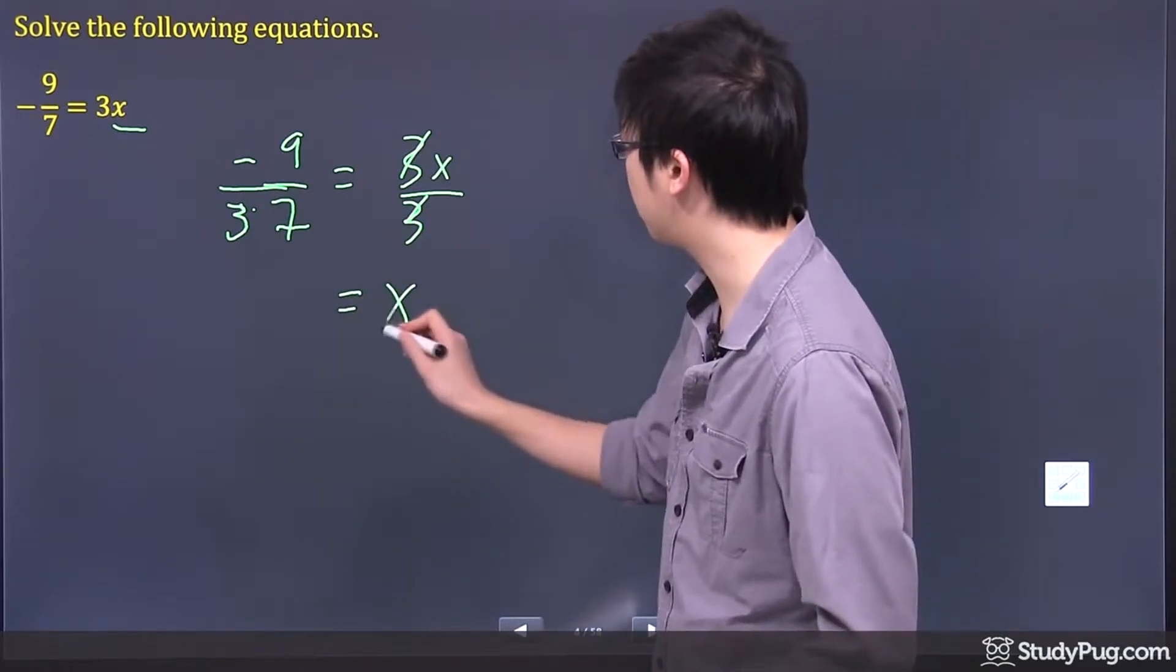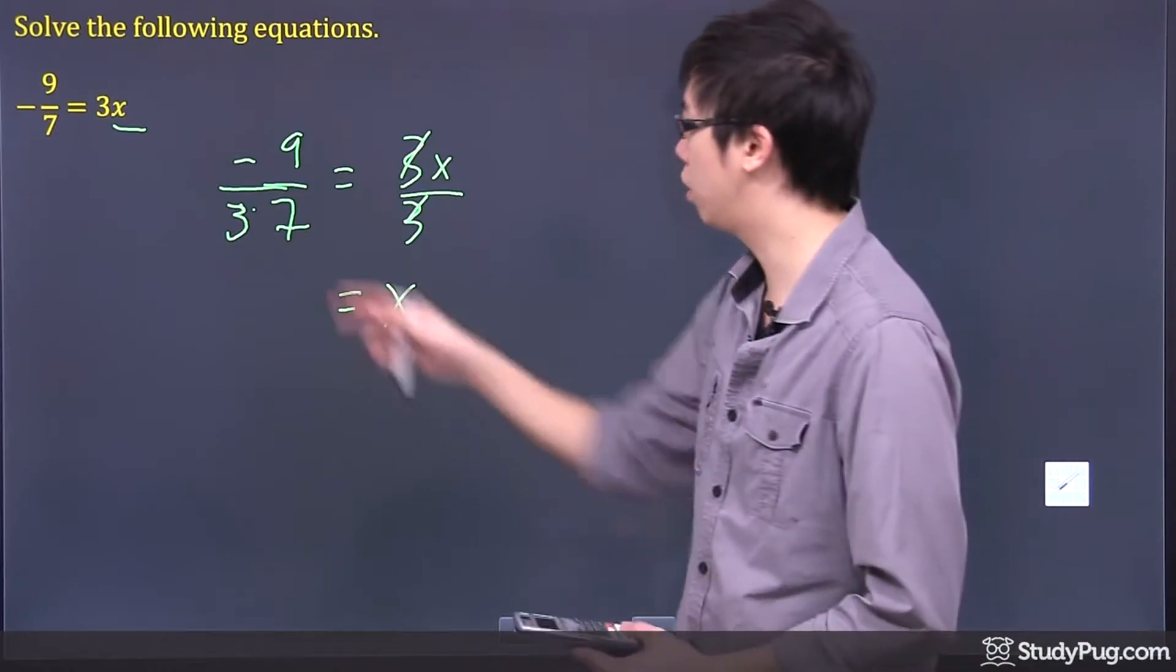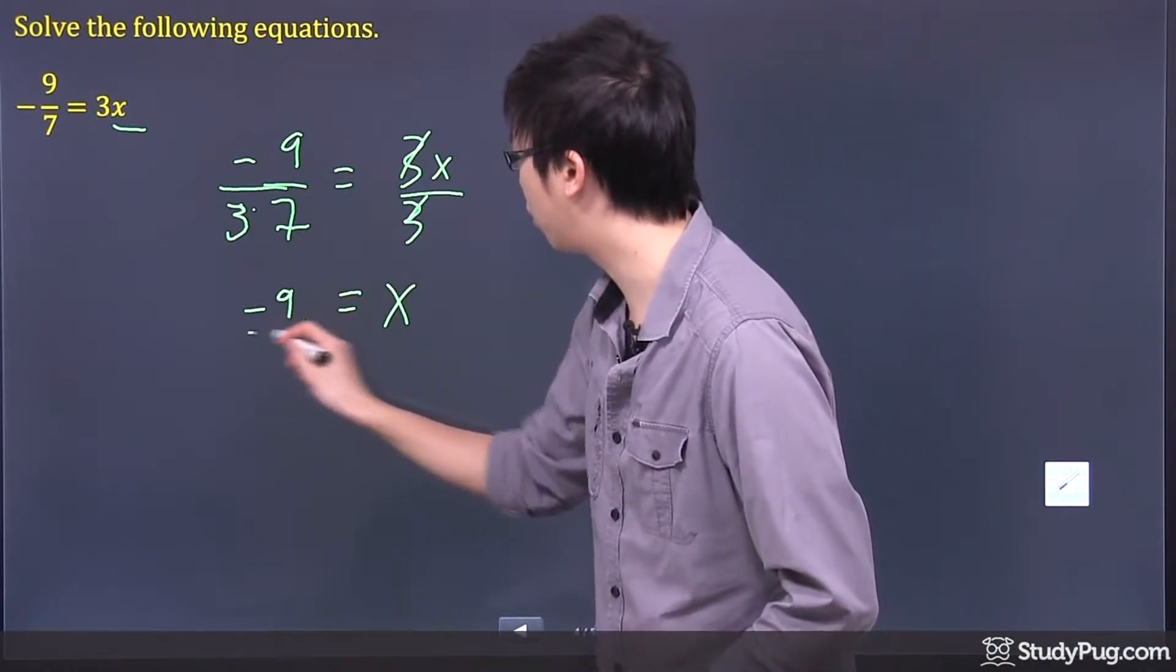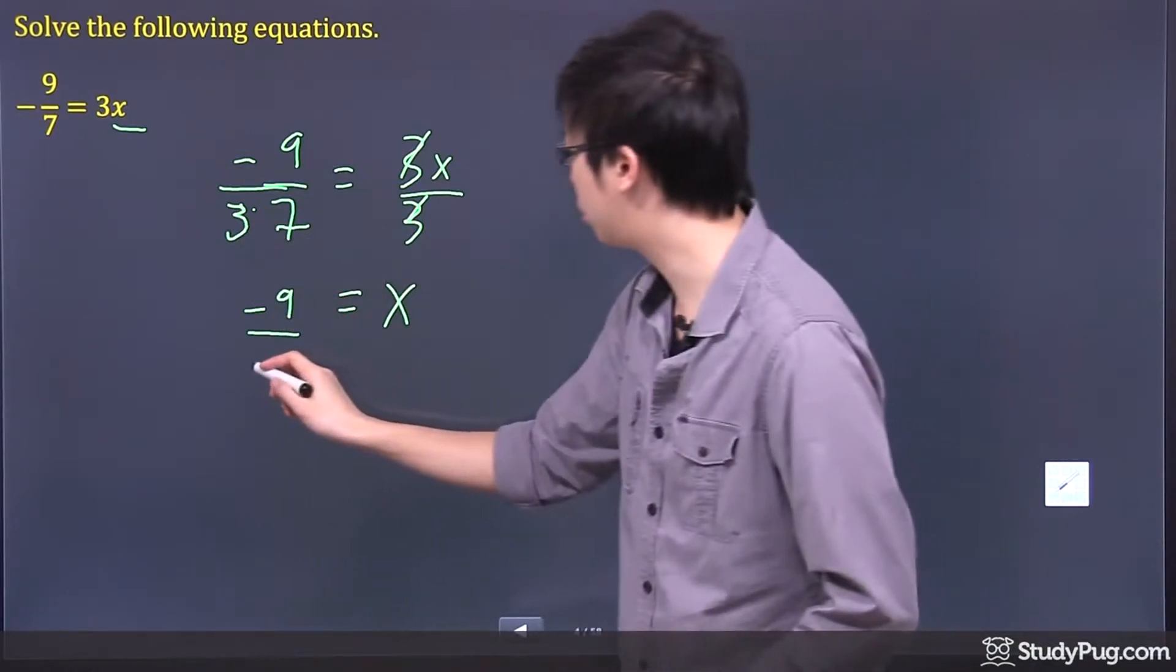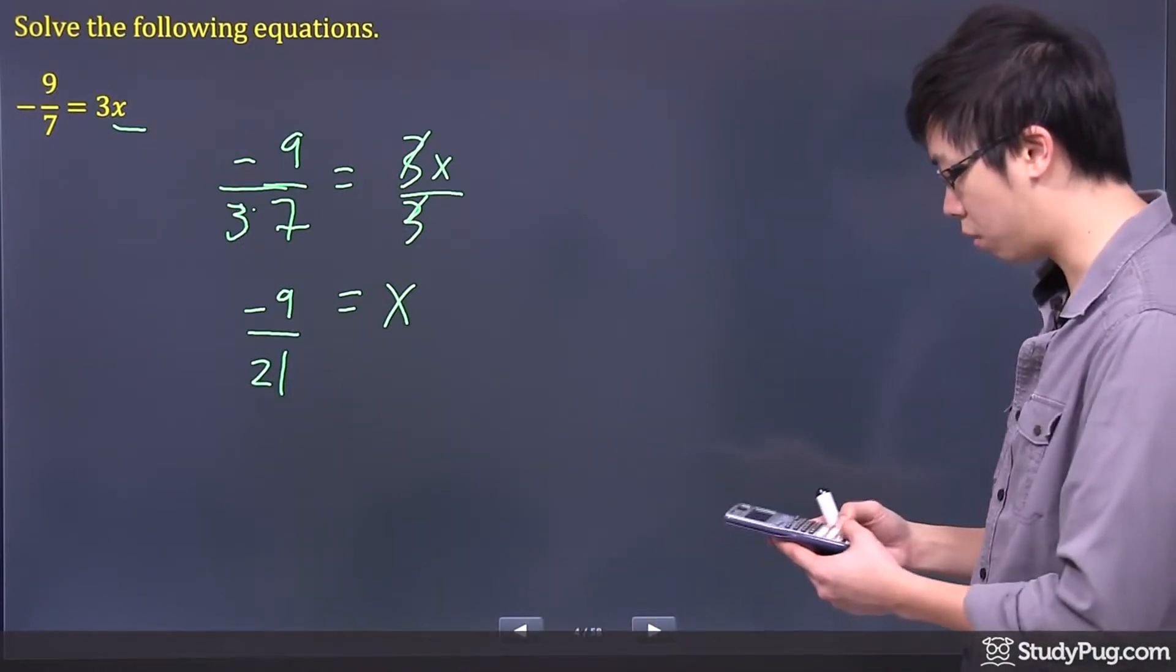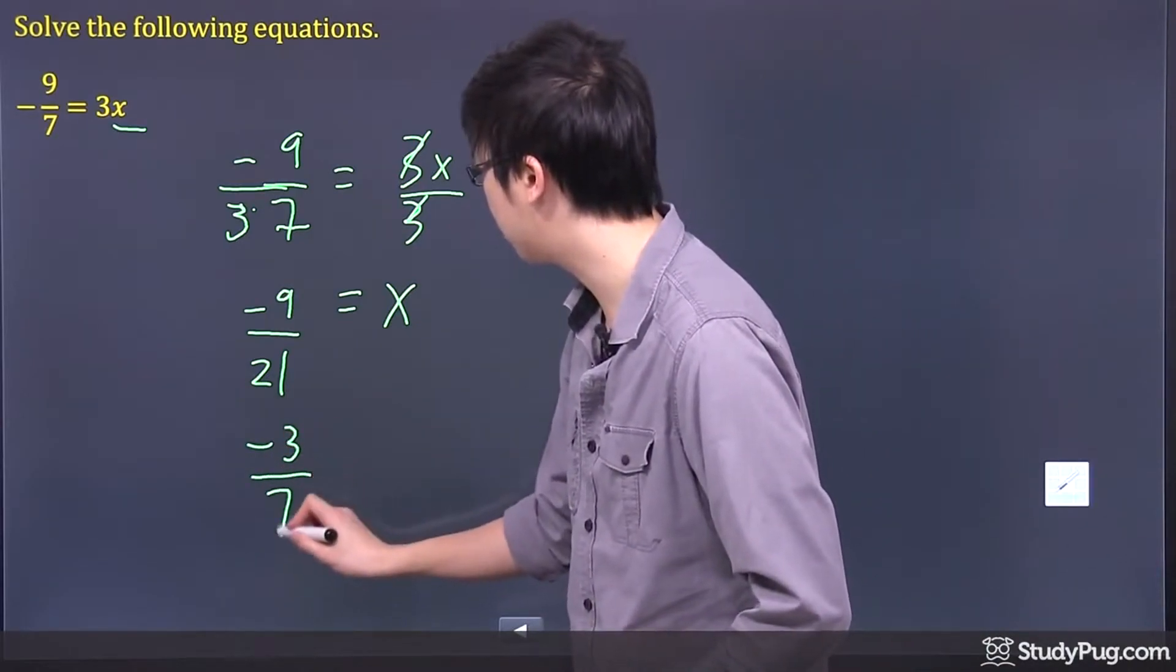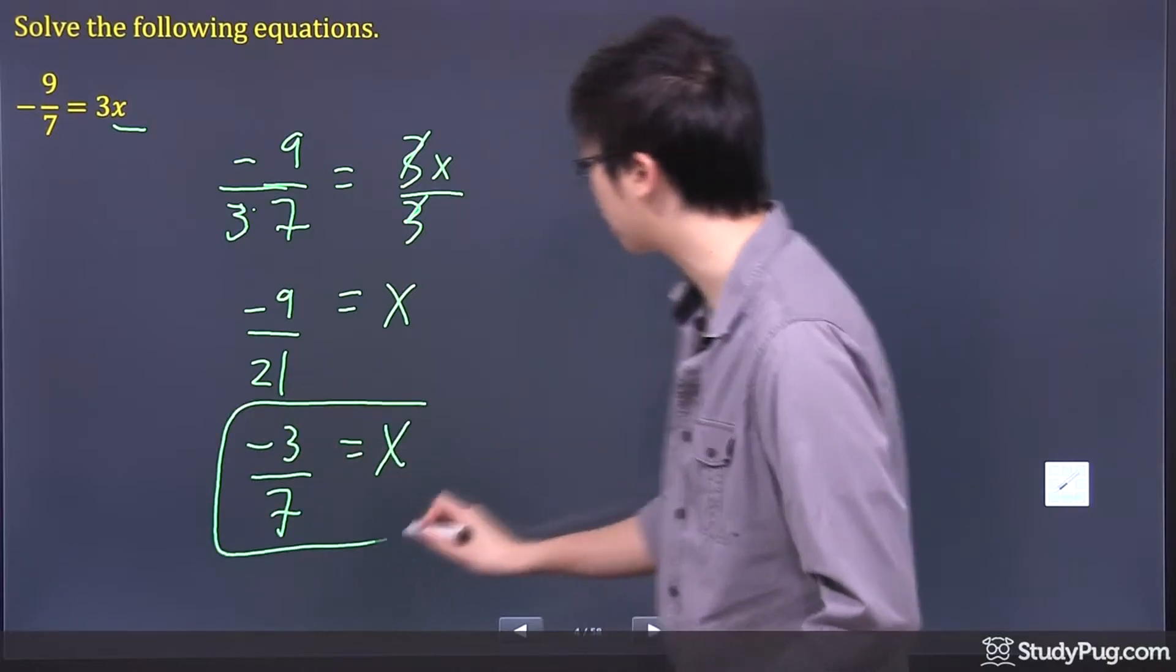So you're left with just the x on this side, and it's 9 over 3 times the 7 here. Or you can figure out the work between 7 and a 3, which is 21, and then you will have to simplify it at the end, which is 9 over 21 will give you 3 over 7. So it's negative 3 over 7. And that will be your final answer, which is right here.